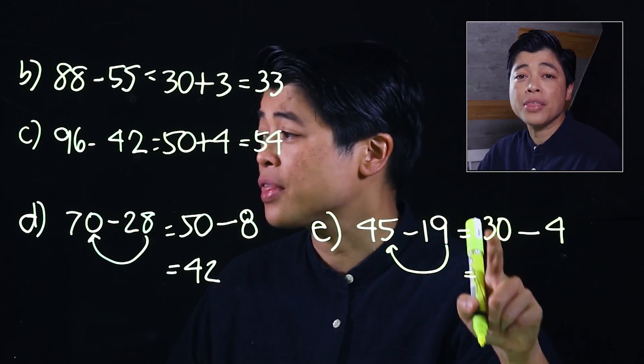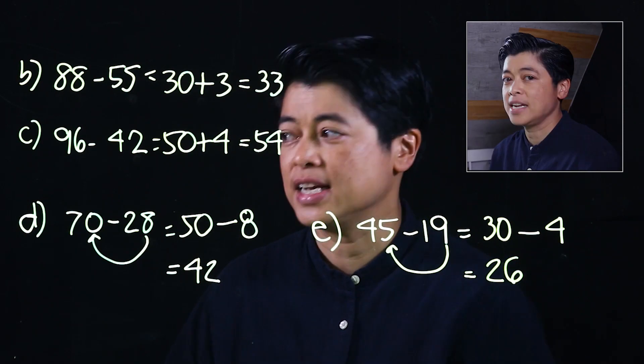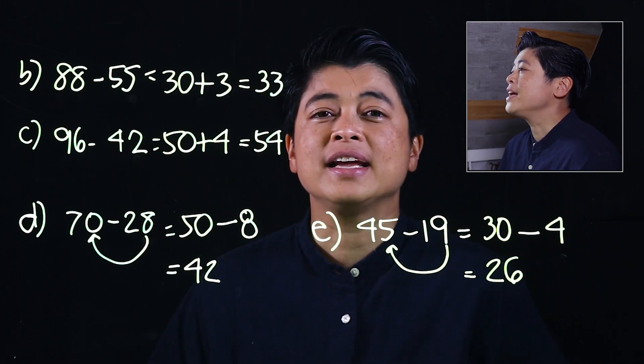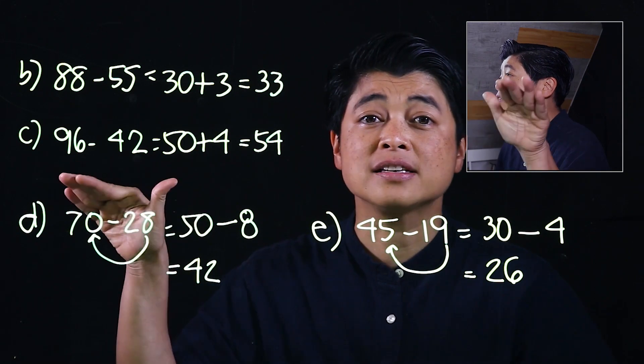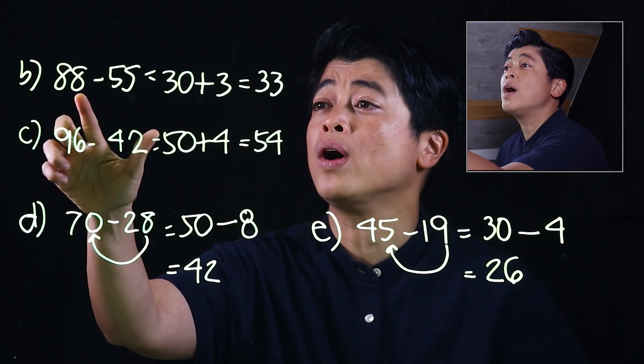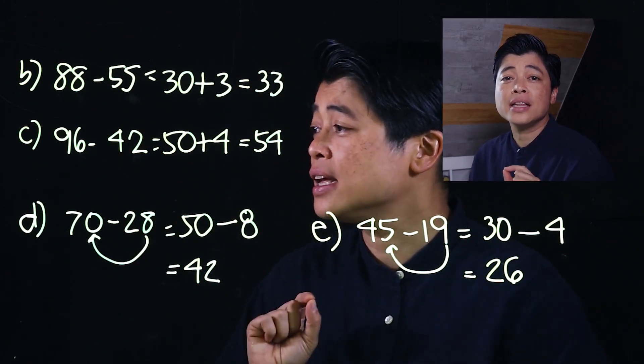Taking 4 away from 30 gives us 26. To summarize: for mental subtraction, keep the horizontal format. First look at the ones digit — if no regrouping is needed, add its difference to the tens difference. If the ones digits need regrouping, subtract that difference from the tens difference. That concludes lesson four of chapter three and the whole module. See you in the next module.